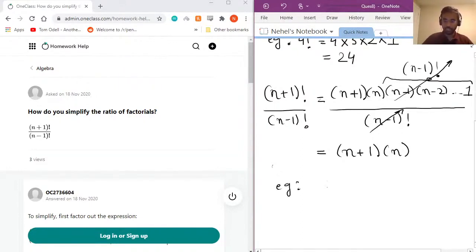So just a quick example: if I have factorial of 6 divided by factorial of 4, we can say this is equal to 6 times 5 times 4! over 4!. And then this will cancel, and we will be left with 30.